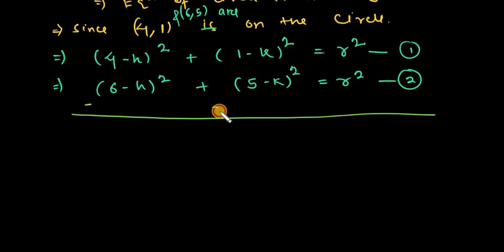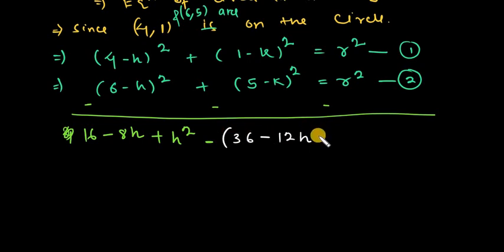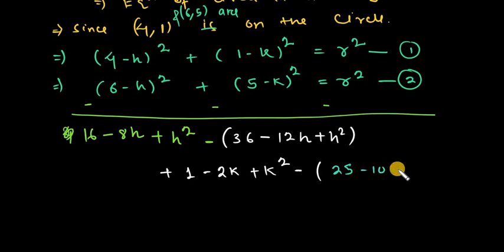Now we subtract Equation 1 from Equation 2. Expanding: (4-h)² gives 16 minus 8h plus h square. Then (6-h)² gives 36 minus 12h plus h square. And (5-k)² gives 25 minus 10k plus k square.